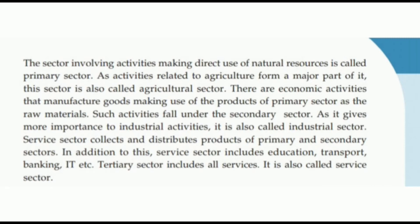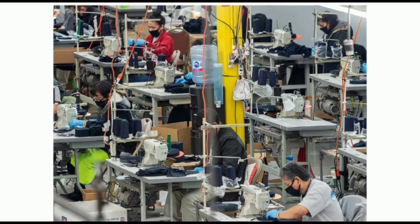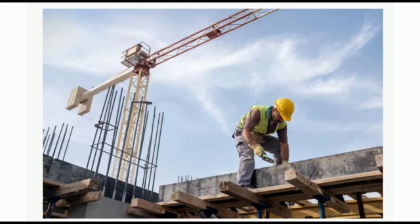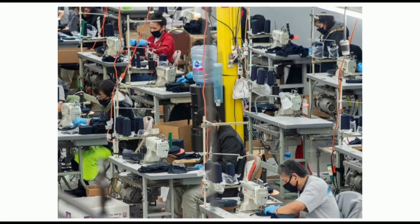Industry is an example of the secondary sector. We use a lot of machines to produce goods in industry. In the secondary sector, we use the products of the primary sector and then use tools and machines to produce things. The secondary sector is otherwise known as the industrial sector.